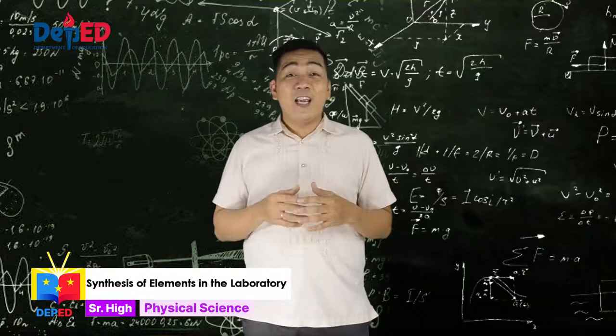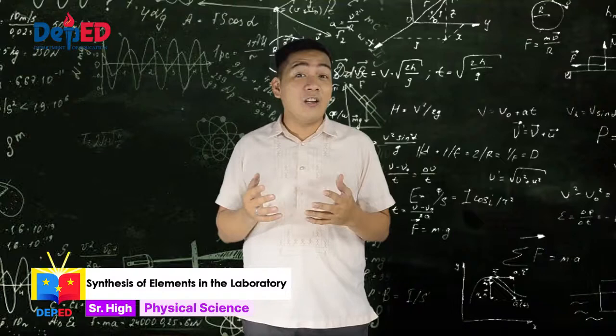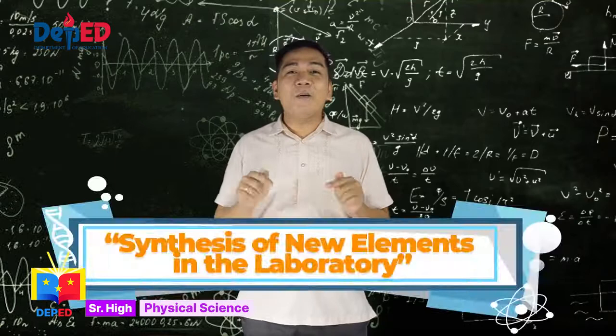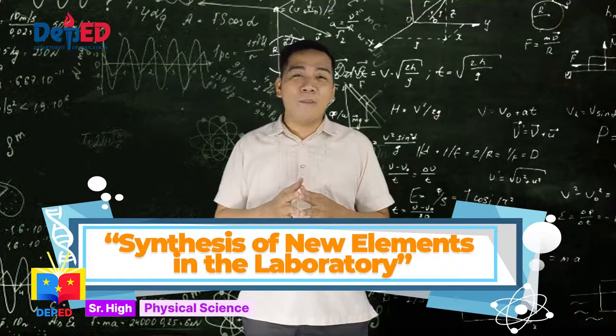In our previous episode, we learned how the elements were formed in extremely hot environments like the early universe, the core of the stars, supernova, and collision of neutron stars. Today, we will discover how the elements are synthesized in the laboratory and how the concept of atomic number led to that.